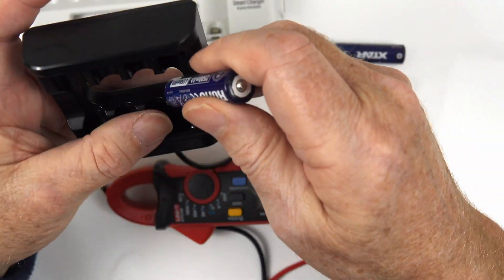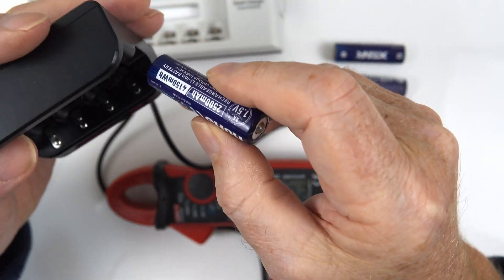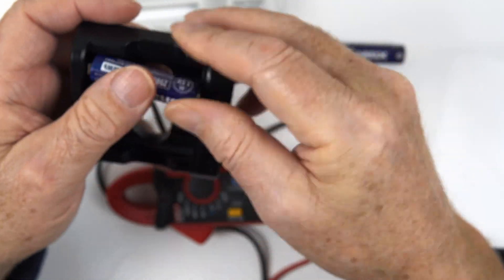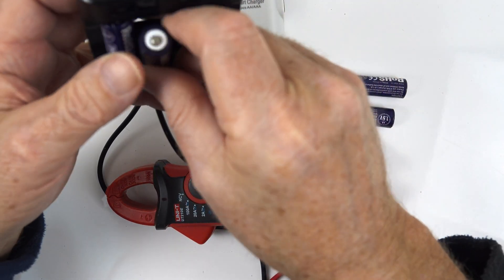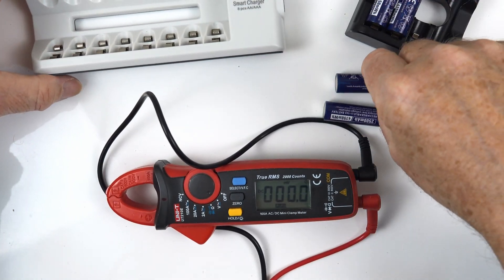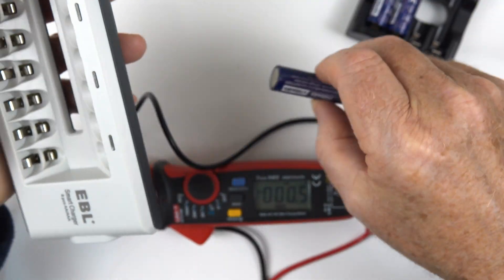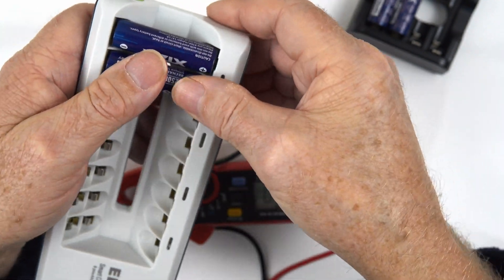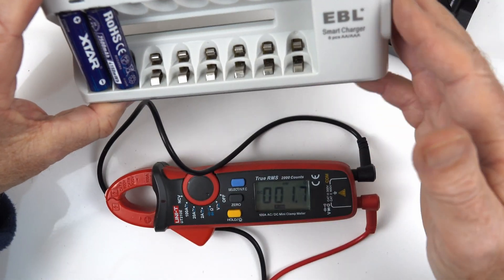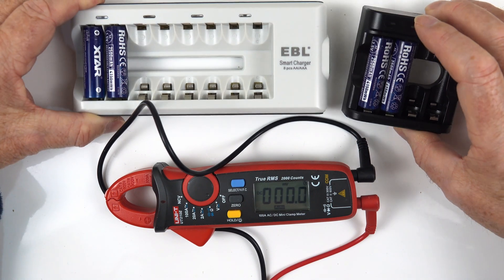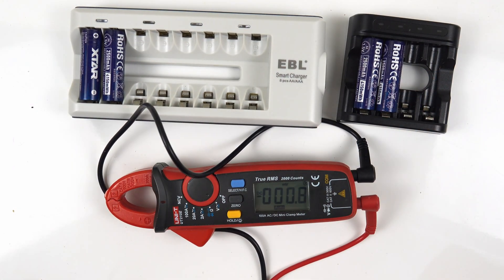So we'll be using the EBL smart charger and we'll be using the Xtar L4. And we'll just pop two batteries in. Might help if I put them around the right way. So two in there and just a random two, whichever we pick up. That one and that one. So I'll put the power onto these and then we'll come back later and we'll check to see what the results are.